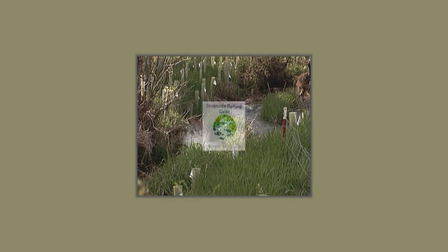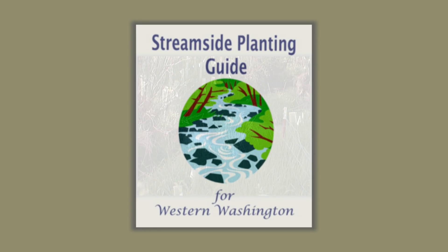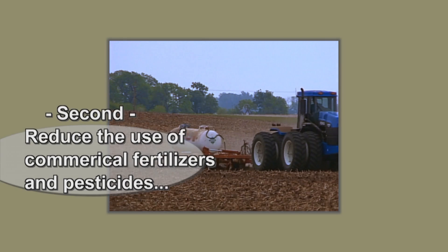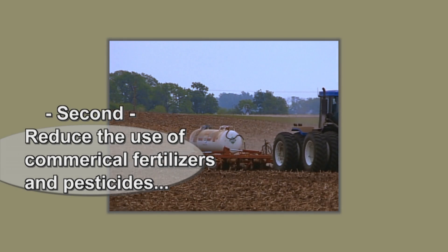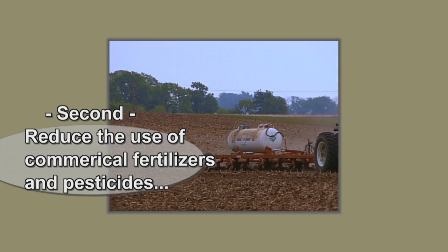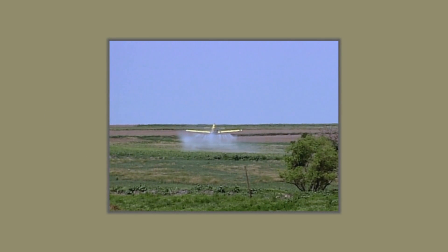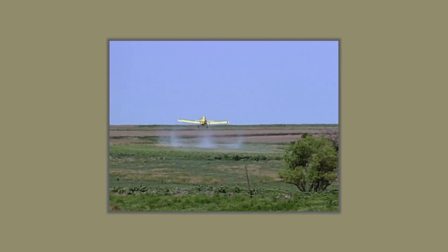The publication Streamside Planting Guide for Western Washington provides comprehensive information and is available free online. Second, reduce the use of commercial fertilizers and pesticides by applying only the amount necessary and at the appropriate times of year.